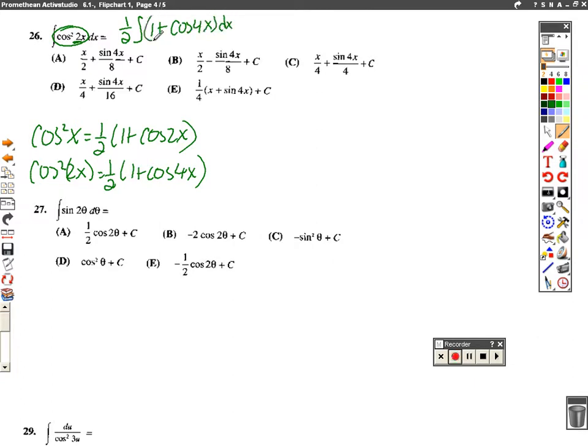All right, let's integrate that. We got 1 half, the integral of 1 is x. The integral of cosine is sine of 4x divided by 4, divided by that k, plus c.